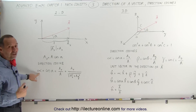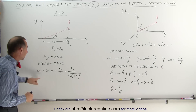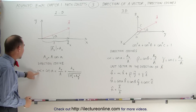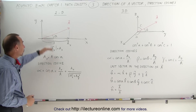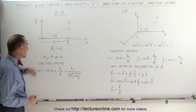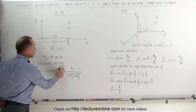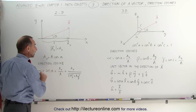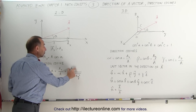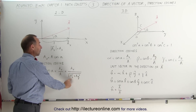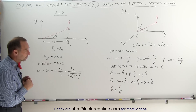We use the letters alpha, beta, and gamma to define the three direction cosines. Relative to the x-axis, we use the Greek letter alpha, which equals the cosine of the angle between the vector and the x-axis. That can be defined as the magnitude of the x-component divided by the magnitude of the vector — in 2D, that would be a_x divided by the square root of a_x squared plus a_y squared.